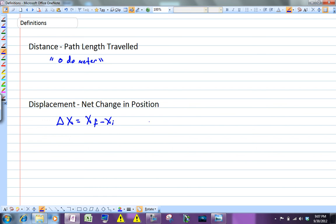And displacement is going to have both a magnitude, a size, and it's going to have a direction, whereas distance is only going to have a magnitude.